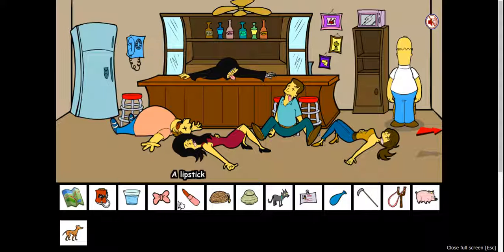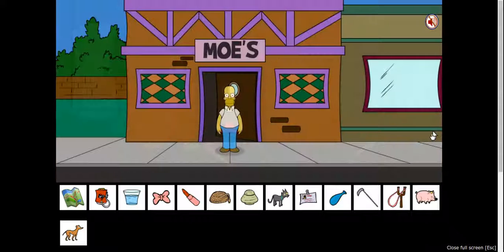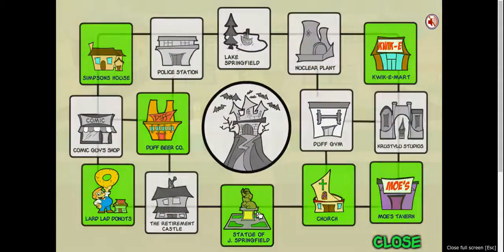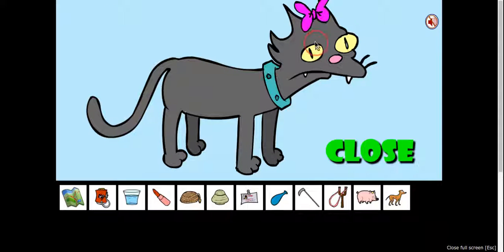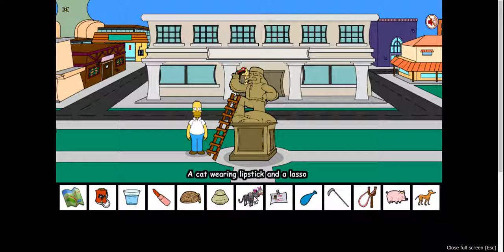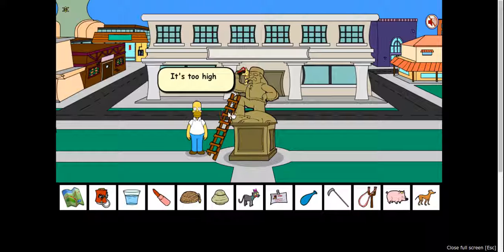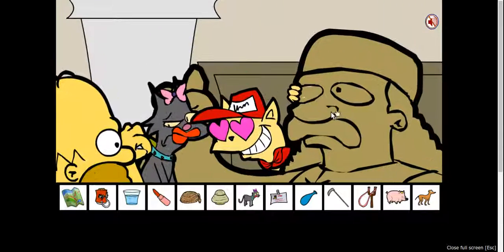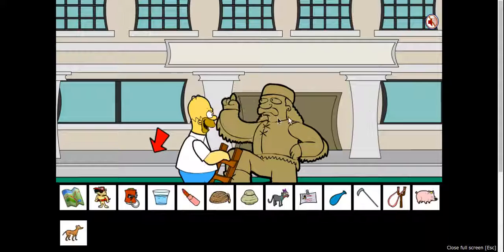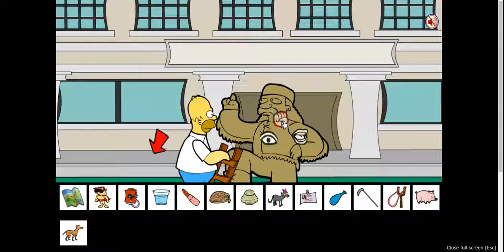Okay, so everybody remembers how Duff Cat was here at the statue. So we got Snowball here. I believe we're supposed to put that on her and we're supposed to give her the lipstick and lasso. This is just so bizarre - a cat wearing lipstick and a lasso. Okay, you gotta climb the ladder. Hello Duff Cat, let me show you.